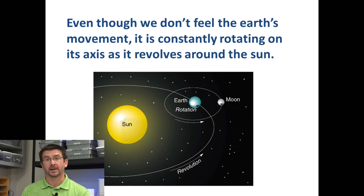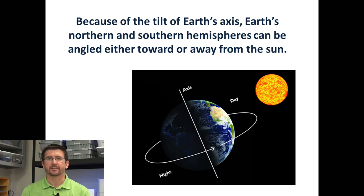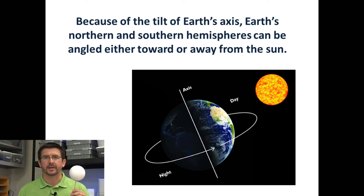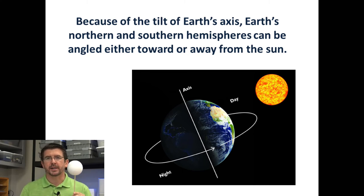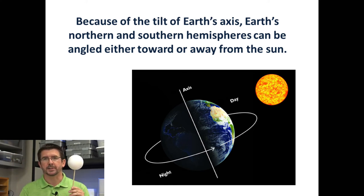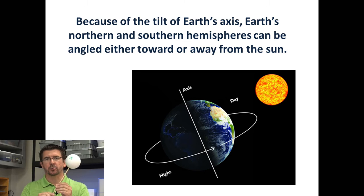In reality, Earth is moving in many different ways — it's rotating on its axis constantly and it's constantly revolving or orbiting the sun. Earth's axis is just its imaginary line that runs from the North Pole to the South Pole, and that's the point that Earth rotates on. To demonstrate the axis of the Earth and how it's positioned, I'm going to use this foam ball on the stick. It's important to understand that Earth's axis is not straight up and down — it's actually tilted at about a 23-degree angle compared to the sun.